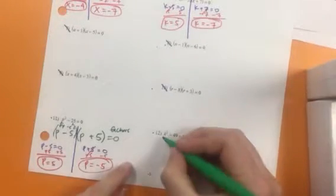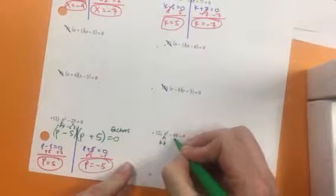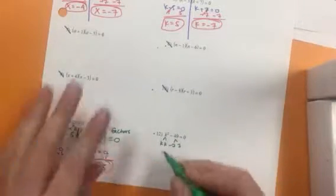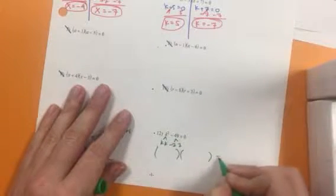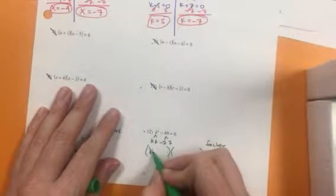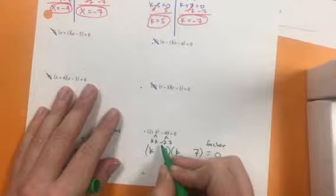Let's try it again. I break up the k. 49 would be 7 and 7. But one has to be negative. I'm going to factor it. k's go in the front. 7's go in the back. One is a negative and one is a positive.